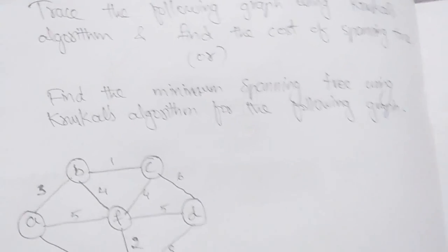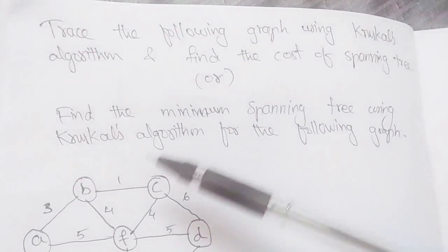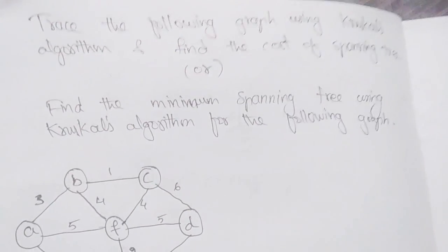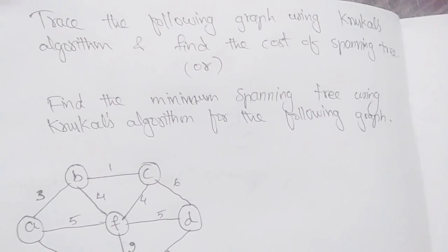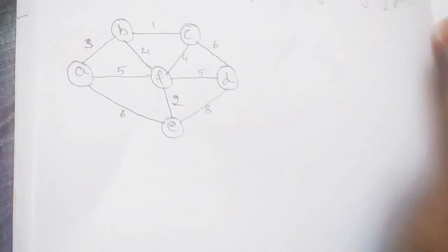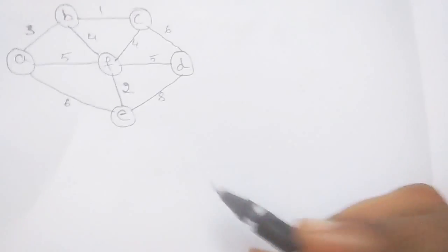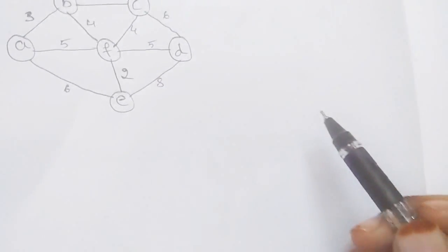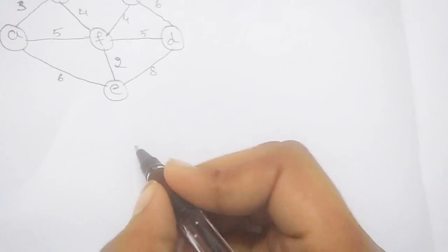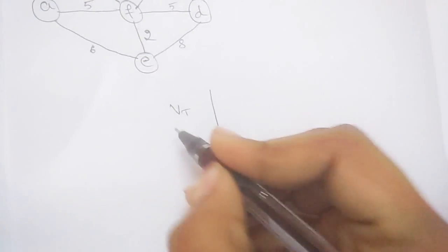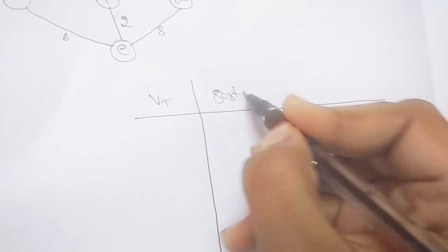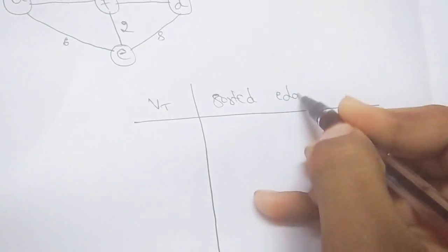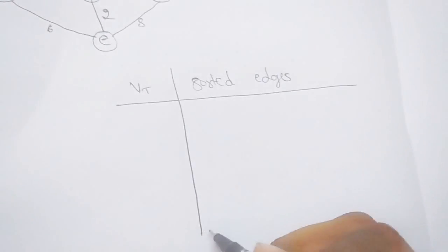In exams they might ask you to trace a graph using Kruskal's algorithm and find the cost of the spanning tree, or find the minimum spanning tree using Kruskal's algorithm for a given graph. For that, you have to construct a table with a 'VT' column and a 'sorted edges' column.